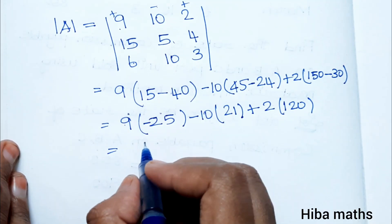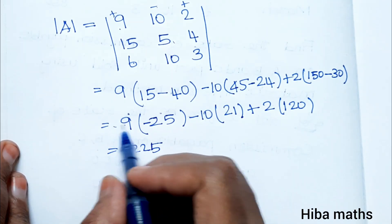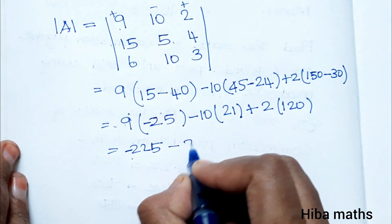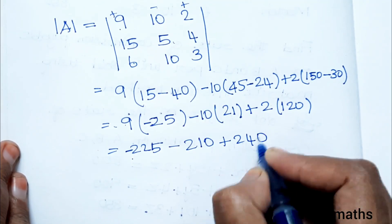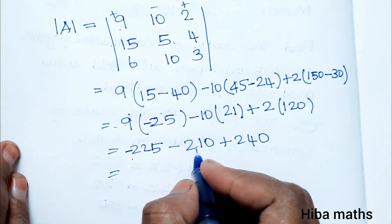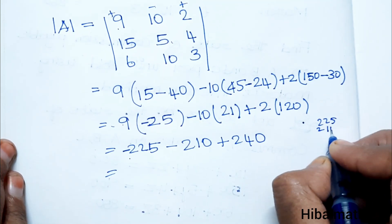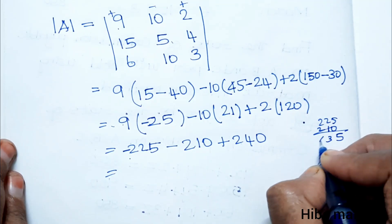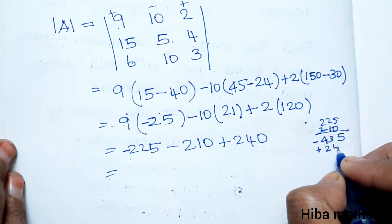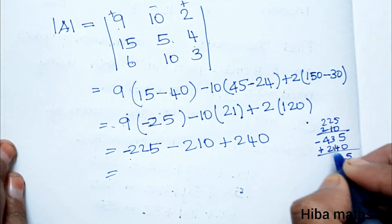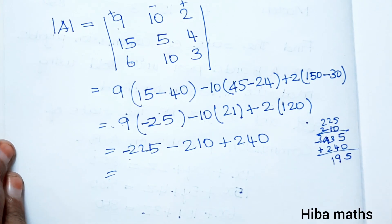Computing: 9 × (−25) = −225. Minus 10 × 21 = −210. Plus 2 × 120 = 240. So the determinant is −225 − 210 + 240 = −195.